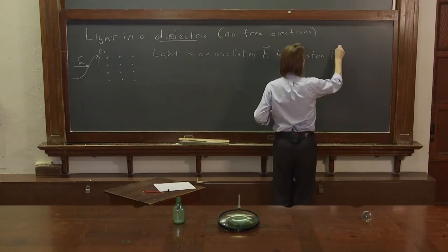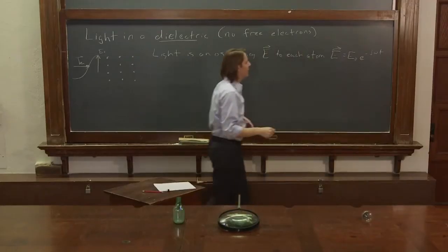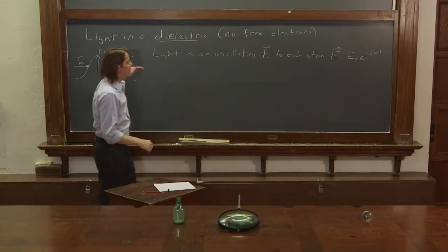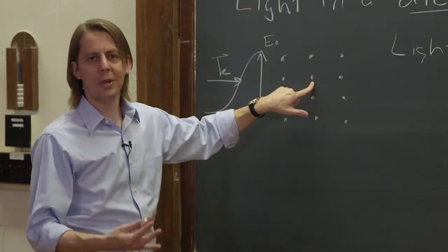So let's say light is an oscillating electric field to each atom. So we could write that as E naught E to the minus j omega t, which looks like the plane wave. And we've removed the spatial part because we're right now just going to think of each atom at one point in space.